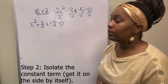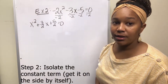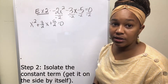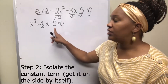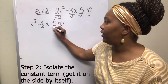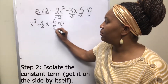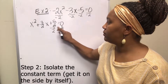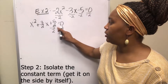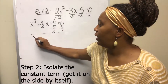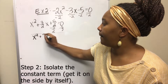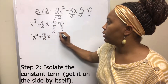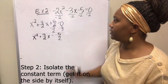Step two: isolate the constant term. The constant term is the term with no variable connected to it, so that's 5 halves. We isolate 5 halves by subtracting 5 halves from both sides, giving us x squared plus 3 halves x equals negative 5 halves.